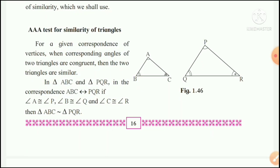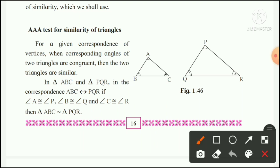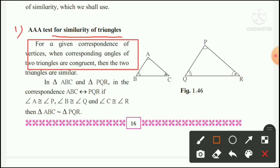AAA test means Angle-Angle-Angle test. For a given correspondence of vertices, when the corresponding angles of two triangles are congruent, then the two triangles are similar.